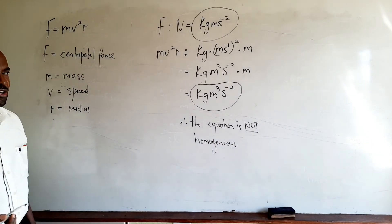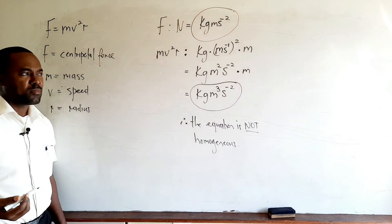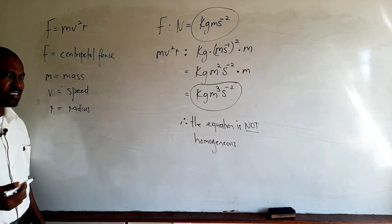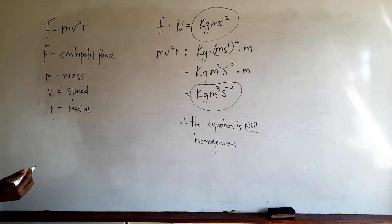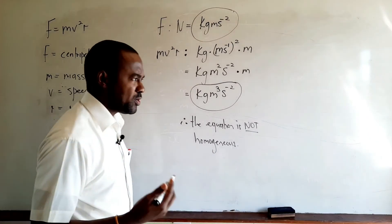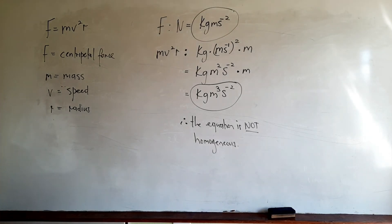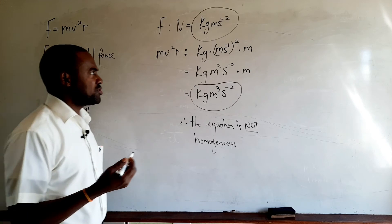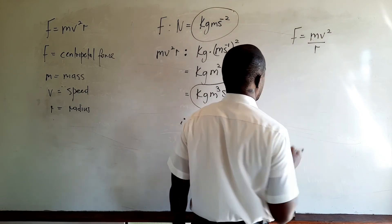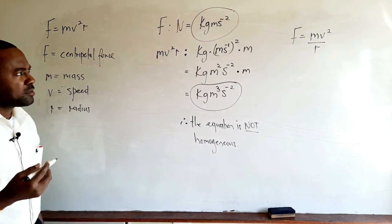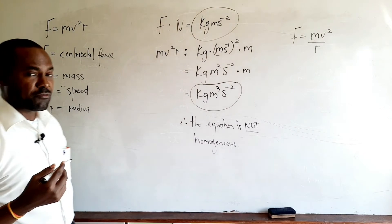We've determined the equation is not homogeneous, which as stated in the previous video means the equation is incorrect. Looking at this equation, we can identify where the error occurred, because this is one we would have some familiarity with. The correct version of the equation should be F equals MV squared over R — that is the correct form for calculating the centripetal force F on a body of mass M moving with speed V in a circular path of radius R.